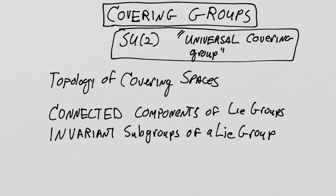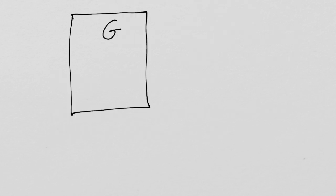The first two things we're going to review are the connected components of a Lie group and the invariant subgroups of a Lie group. We're going to identify what those two things mean. You might remember the way we started this whole project: we identified a group G, which we later learned was a Lie group as we slowly gave it more and more properties. But in its basic step, it's a group, so every element of the group satisfies all of the group axioms.